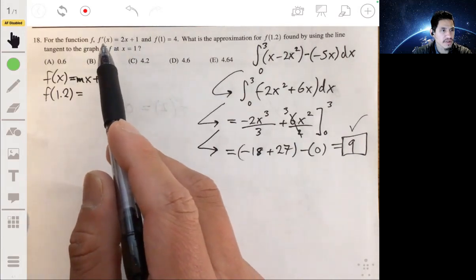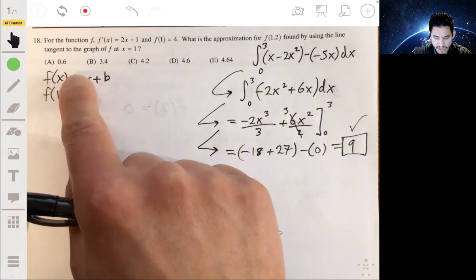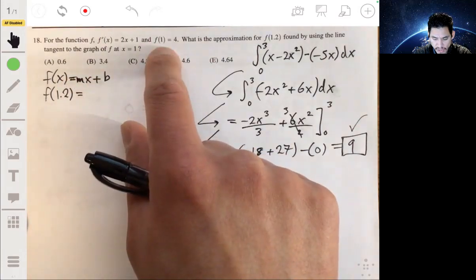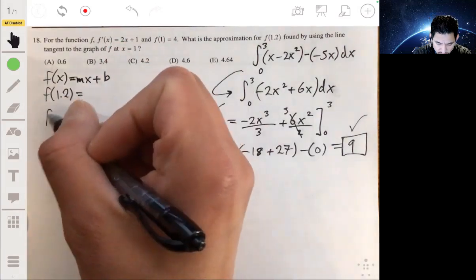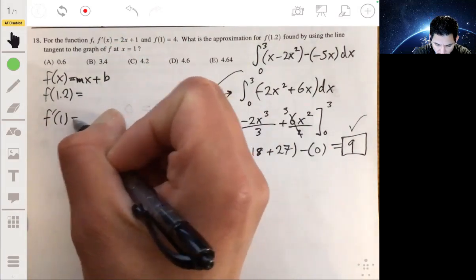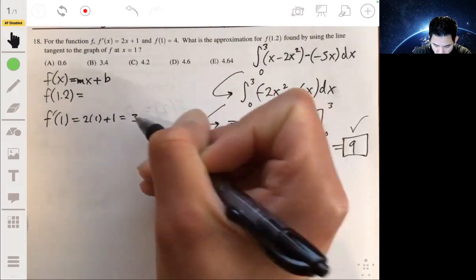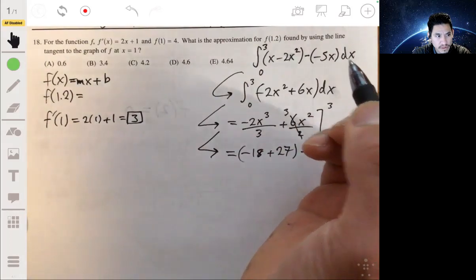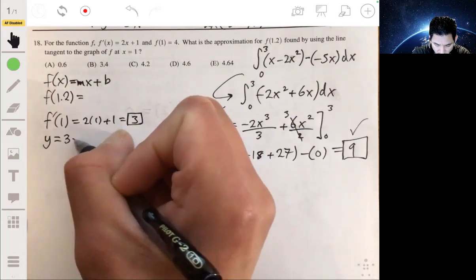So if we're told the derivative is 2x plus 1, we can find the slope of the tangent line at 1 by plugging 1 into the derivative equation. So f prime of 1 is just 2 times 1 plus 1, which is 3.